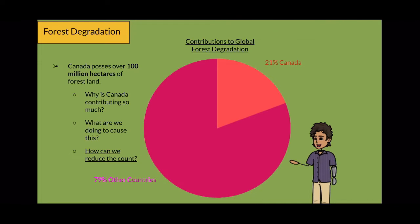Why are we contributing so much? While Canada possesses over 100 million hectares of forest land, which is the third most forest land in the world, the data embarrassingly reveals that we are not doing a proper job of maintaining it. So how can we reduce the count? Stay interested. We will answer this question later in the video.